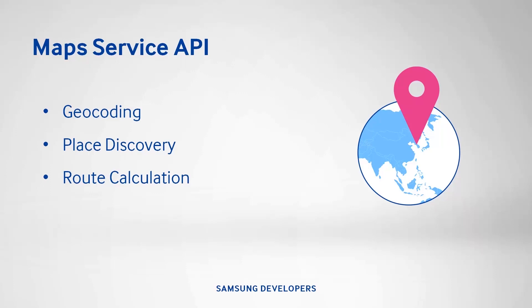Geocoding translates longitude and latitude into a recognizable address and vice versa. Place Discovery provides points-of-interest information — think Travel Companion or Restaurant Finder. Finally, Route Calculation provides a routing path from origin to destination. With all these great features, Tizen 2.4 supports HereMaps as the service provider.